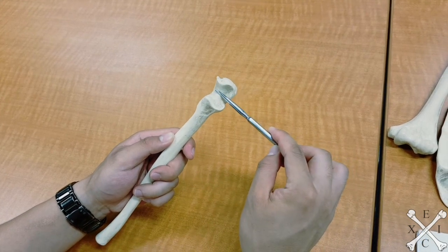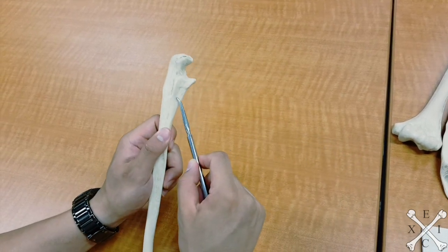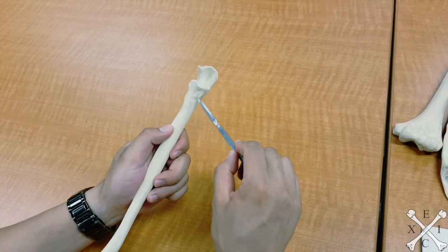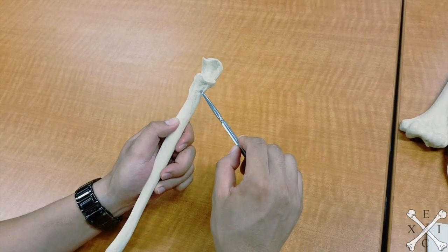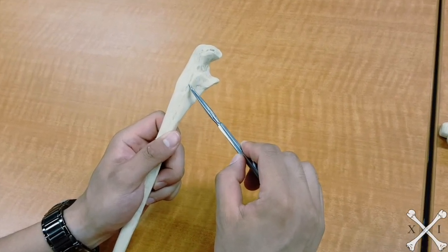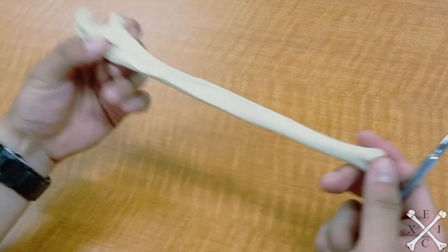Your radial notch is this part right here. Your ulnar tuberosity is this part right here. Your supinator crest which is just this part right there. The shaft of the ulna is this whole thing right here.